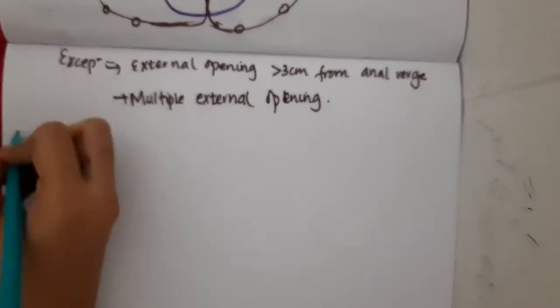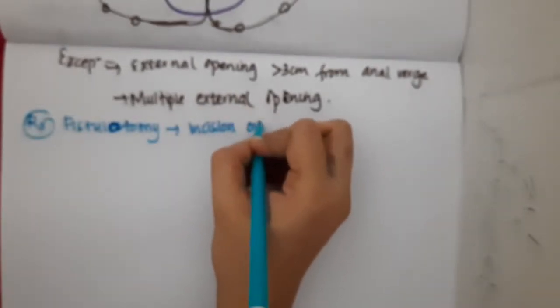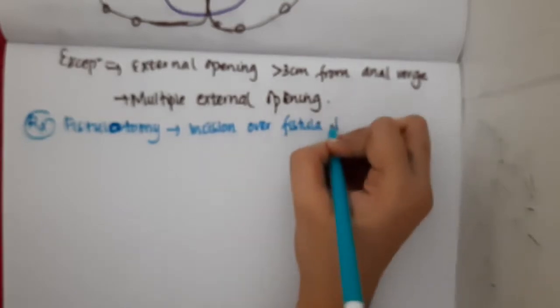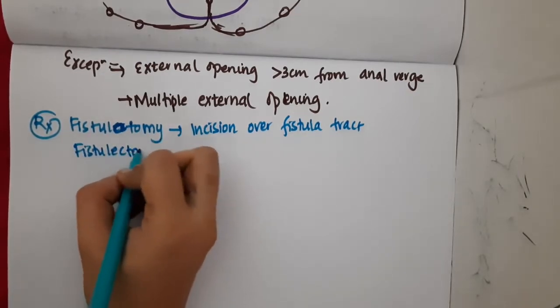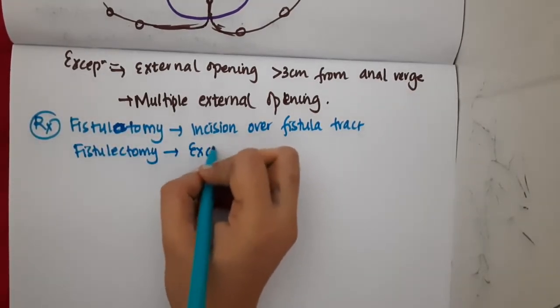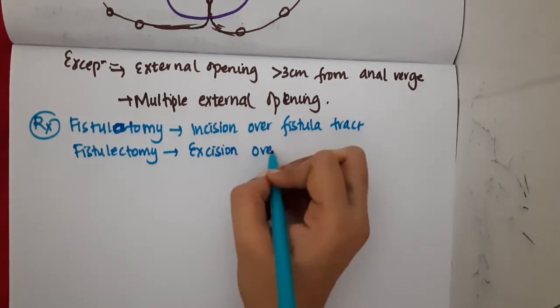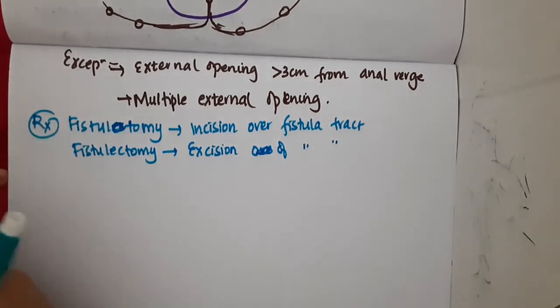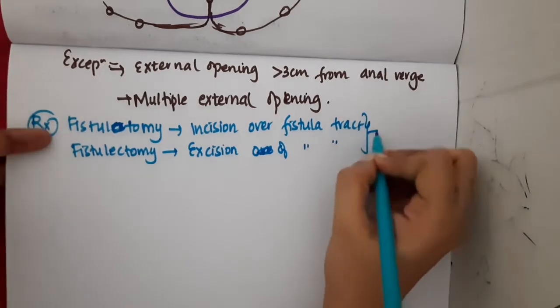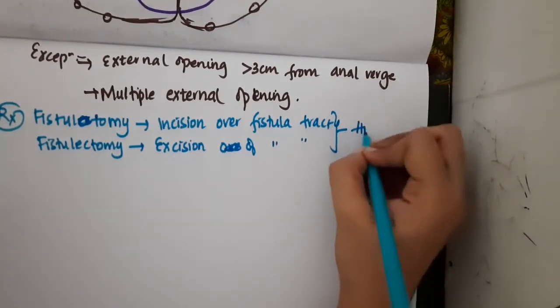For treatment, you can do fistulotomy, where you put an incision over the fistula tract to obliterate it. You can also do fistulectomy, where the entire fistula tract is excised. Both of these are associated with high morbidity.